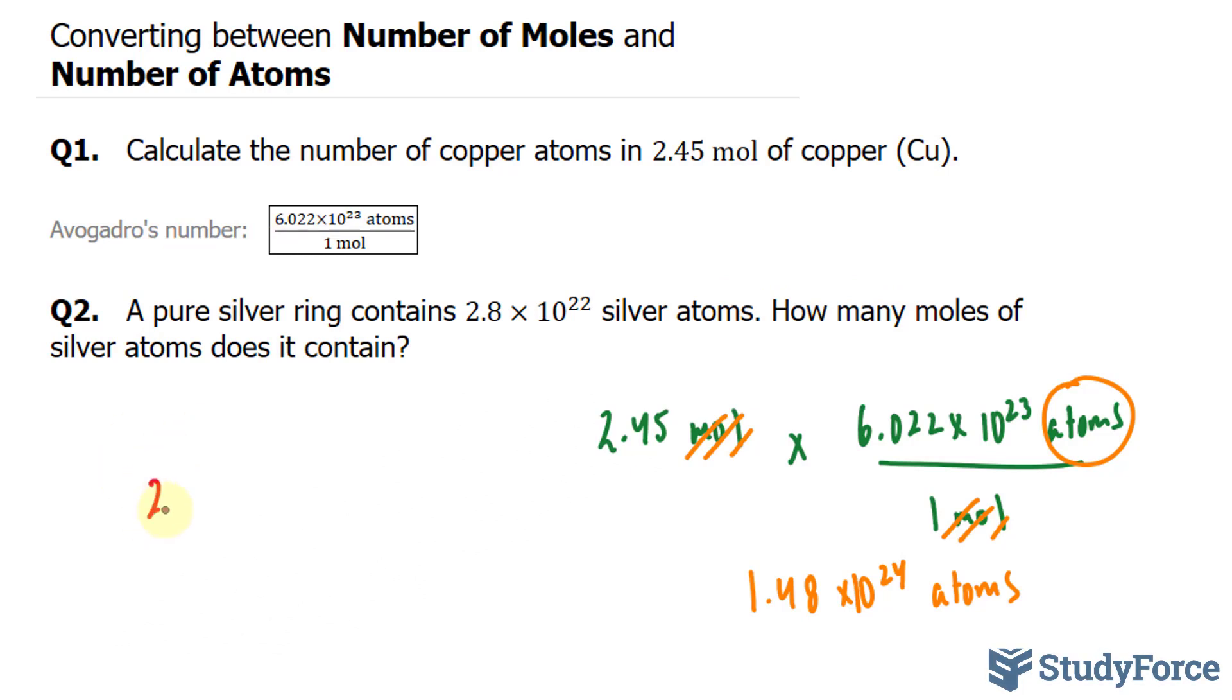Let's use the color red. 2.8 times 10 to the power of 22 atoms. And I'm going to multiply this by the flipped version of this where I have 1 mole at the top and 6.022 times 10 to the power of 23 at the bottom. Notice that we have atoms here and we have atoms here. That will cancel out, leaving us with only moles.